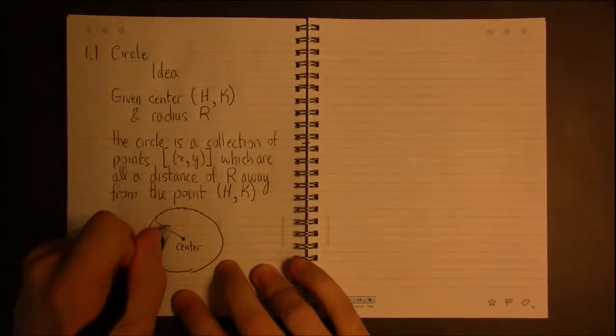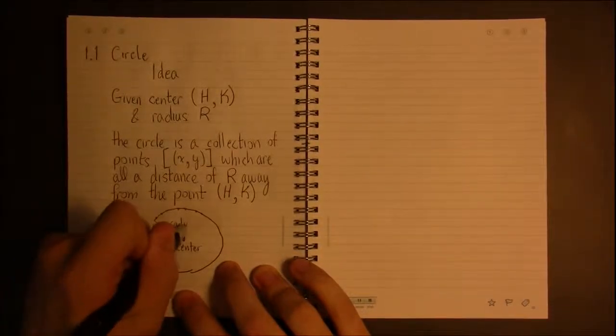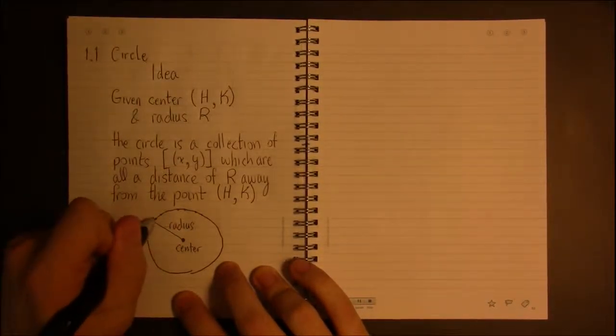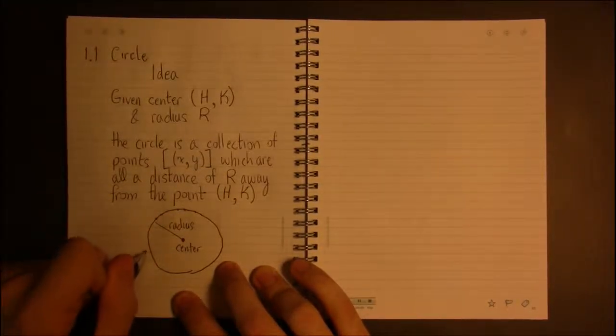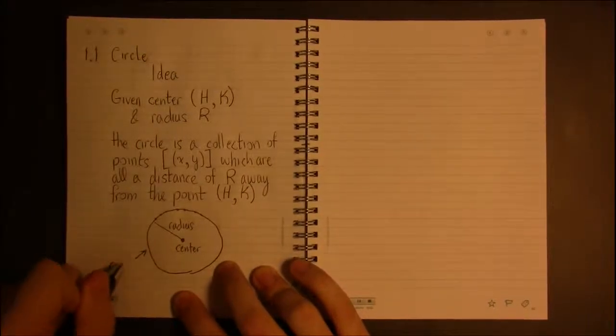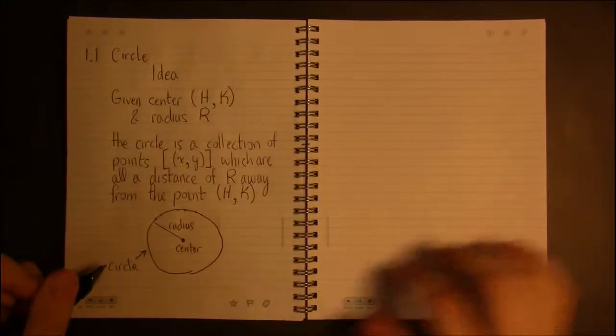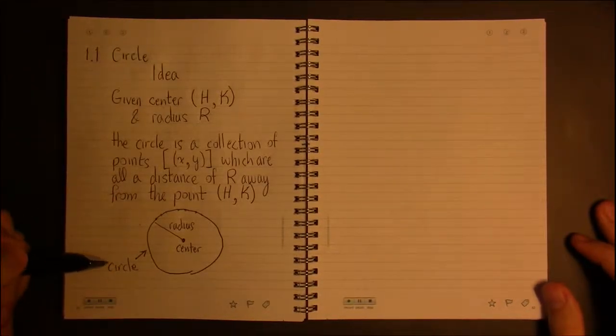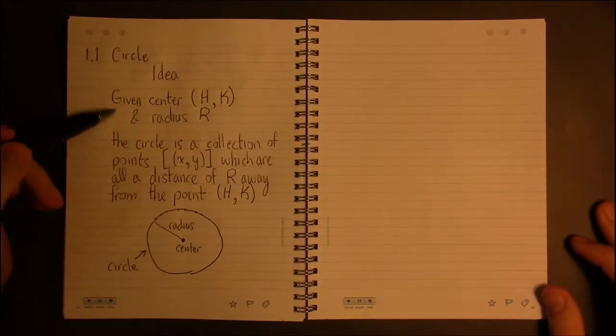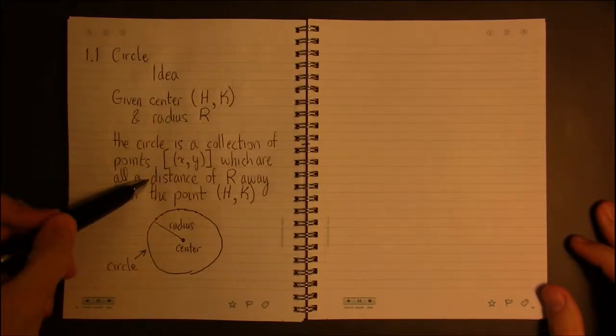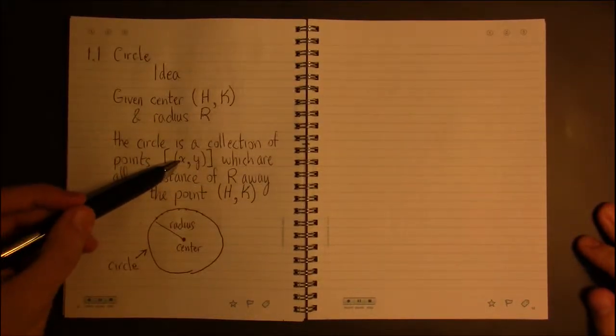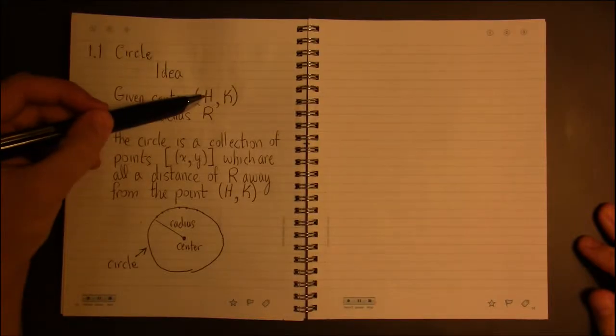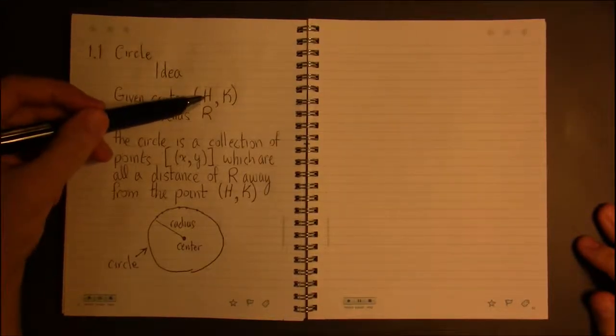So here we have this distance here is the radius and then each of these points, all of this stuff, is the circle. So this gives us a key as to how we're going to define a circle, because it's a distance we're going to get a bunch of X's and Y's that have a distance away from this point.